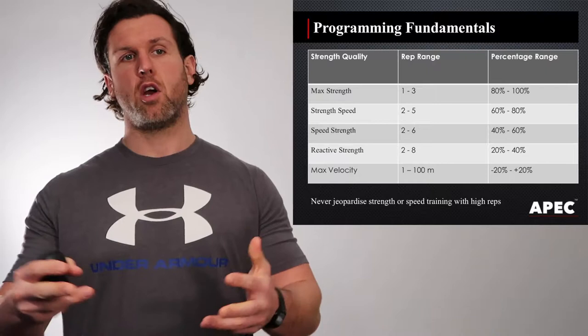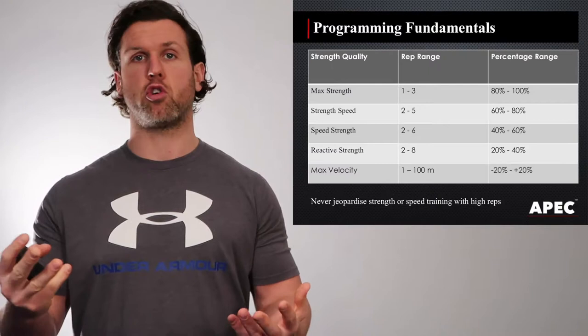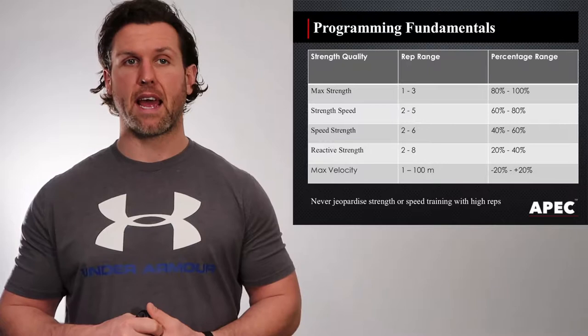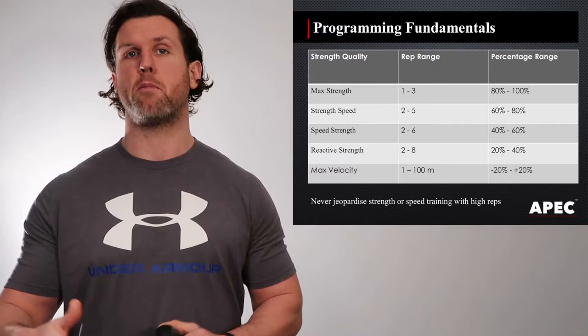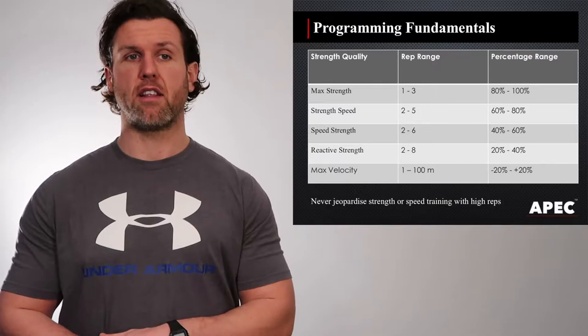For max velocity, the rep range can be anywhere from one to 100 meters, depending on the outcome of the speed session. The percentage range can vary from minus 20% to plus 20% of body weight. We never jeopardize strength or speed training with high repetition.